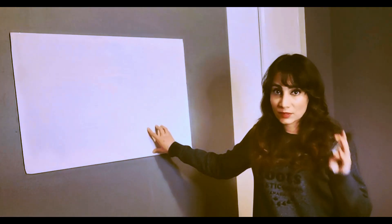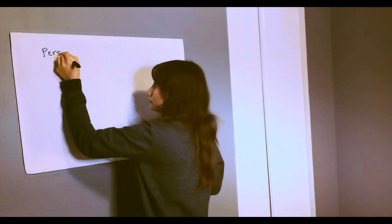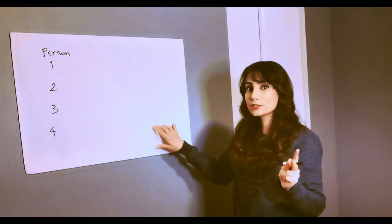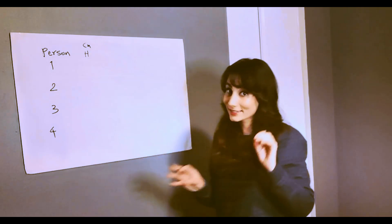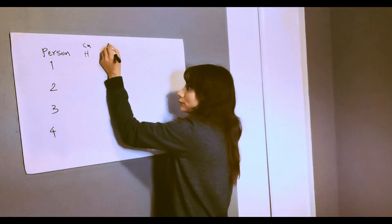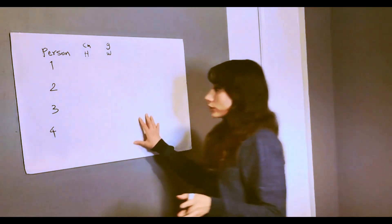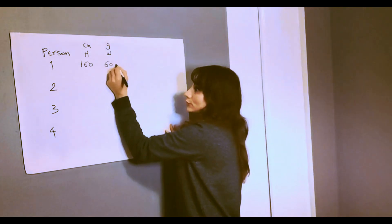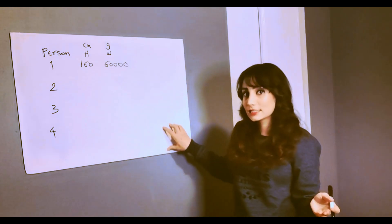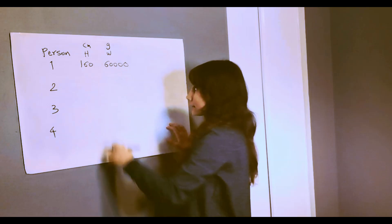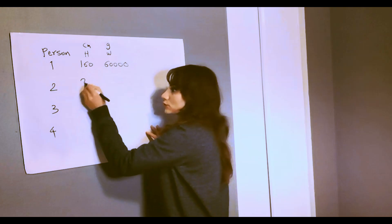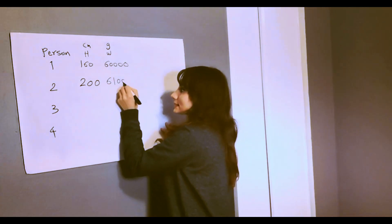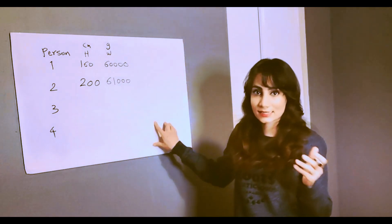Imagine I have four people here. I'm going to label them person one, two, three, and four. I'm going to have two features for these people: one is height in centimeters, and the other is weight in grams. The first person has a height of 160 centimeters and a weight of 60,000 grams, which is 60 kilograms. The second person has a height of 200 centimeters and a weight of 61,000 grams, which is 61 kilograms.